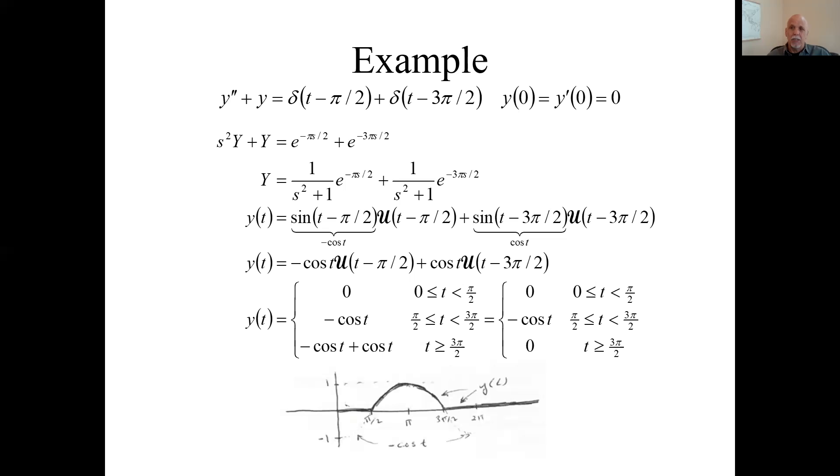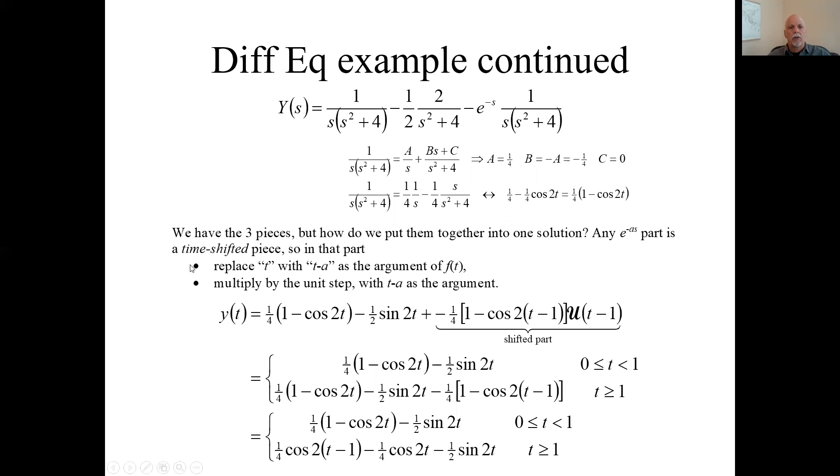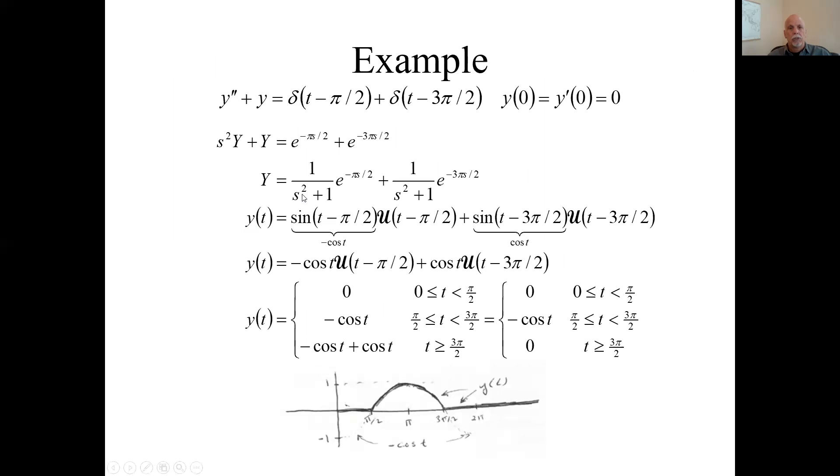Now, remember how we deal with these things? You have something times E to the minus AS. What do we do? Here I kind of corrected this chart. We do two things. We replace T with T minus A in the argument of inverse Laplace transform, and we multiply by the unit step with that same T minus A as its argument. So let's go back to this. So the inverse Laplace transform of this thing is the same as the inverse Laplace transform of that thing, which is just the sine of T. Do two things. Instead of T, we replace it with T minus pi over 2 here and minus 3 pi over 2 here. And multiply each one by the corresponding unit step with the same argument.